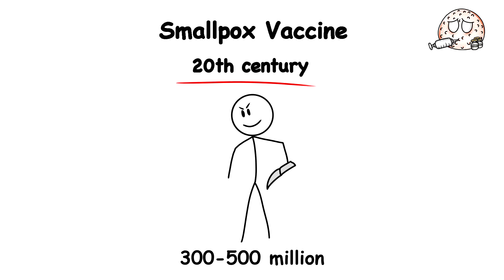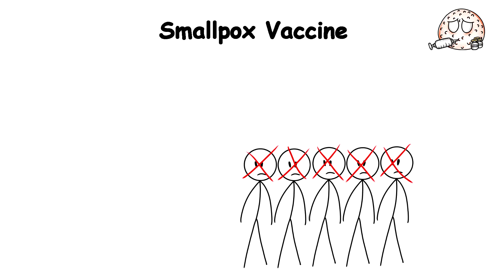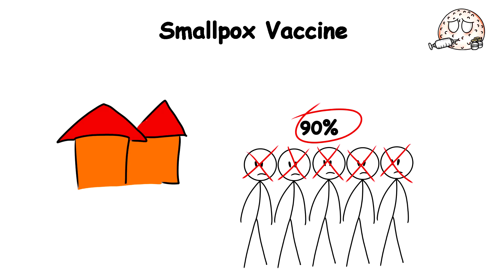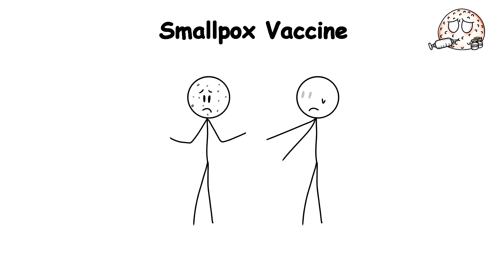Smallpox was one of the biggest killers of Native American populations after Europeans arrived, with some estimates that it decimated populations by 90% or more in certain areas. Even if you did survive the agonizing symptoms, about two-thirds of survivors would be left with permanent scarring or blindness.